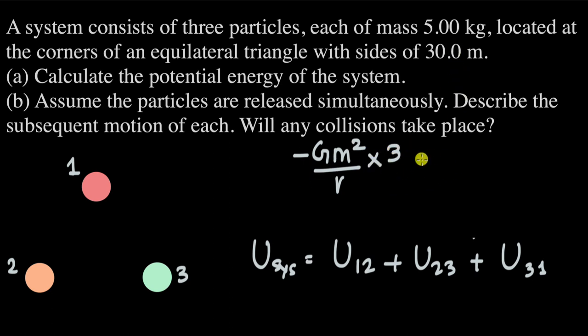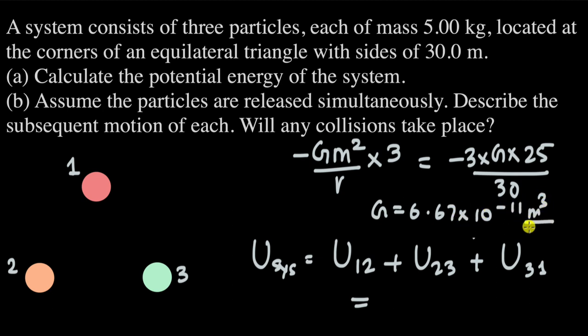When we put in the numbers, this becomes -3 × G × m² / R = -3 × G × 25 / 30. Remember that G = 6.67 × 10⁻¹¹ m³/(kg·s²). After substituting this value, the potential energy is 16.6 × 10⁻¹¹ joules.